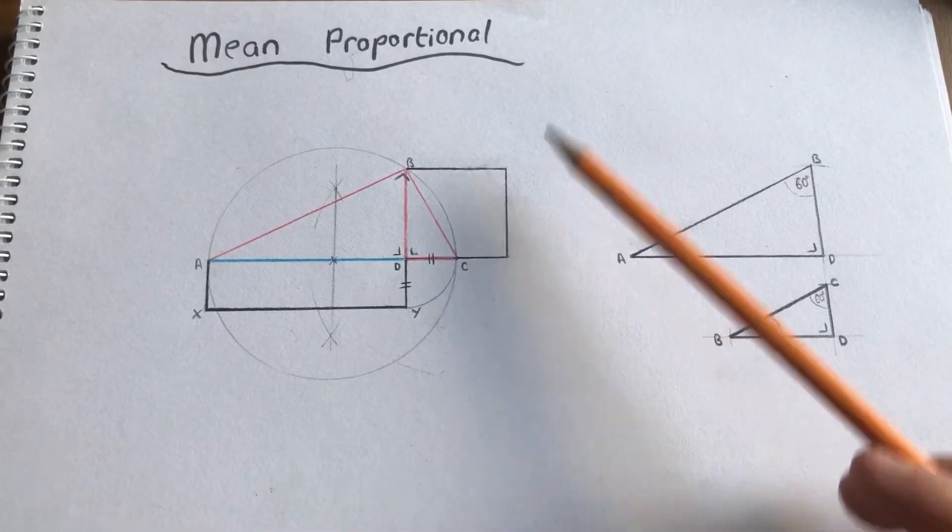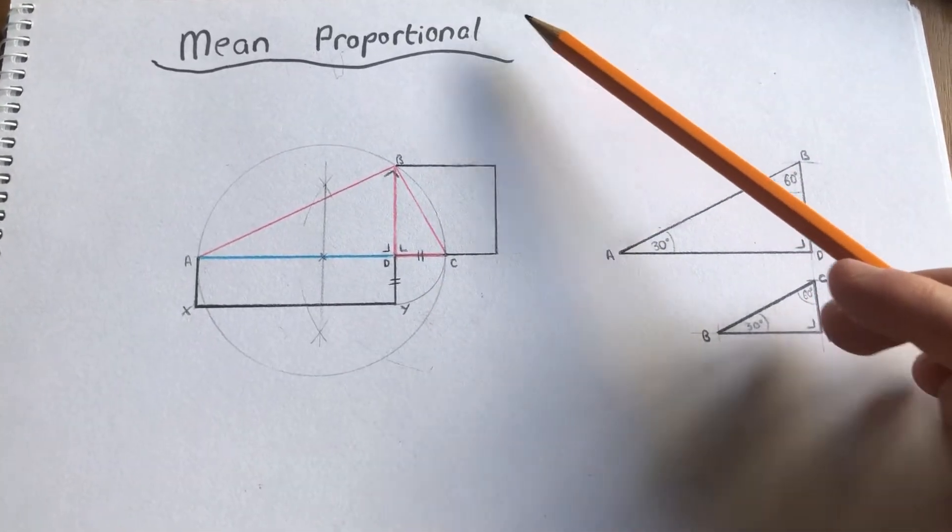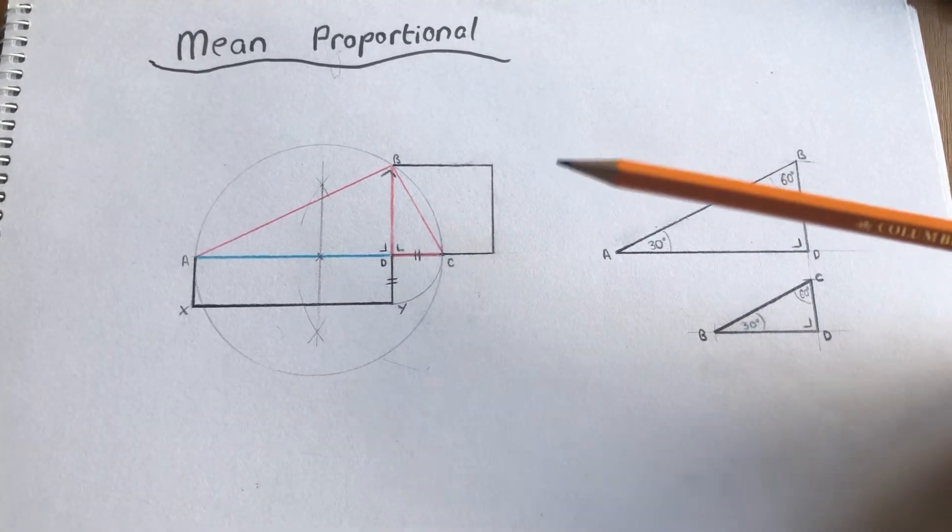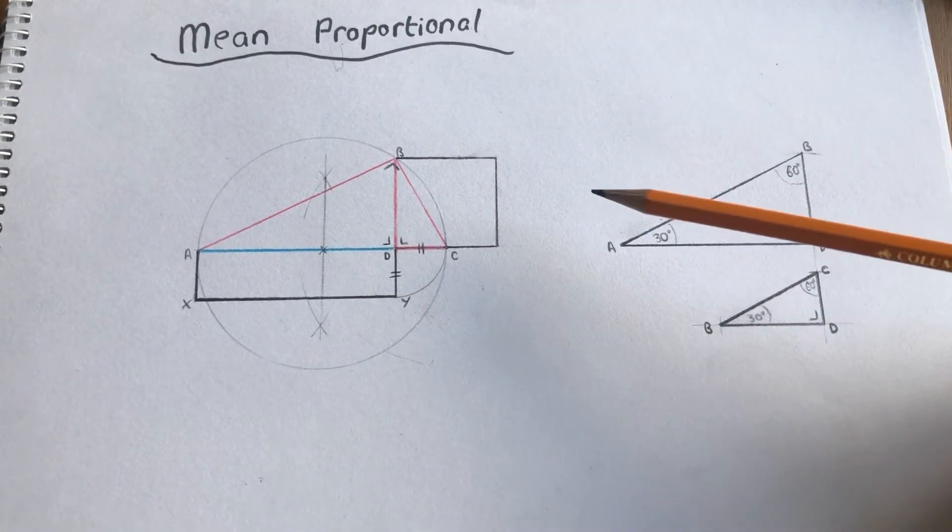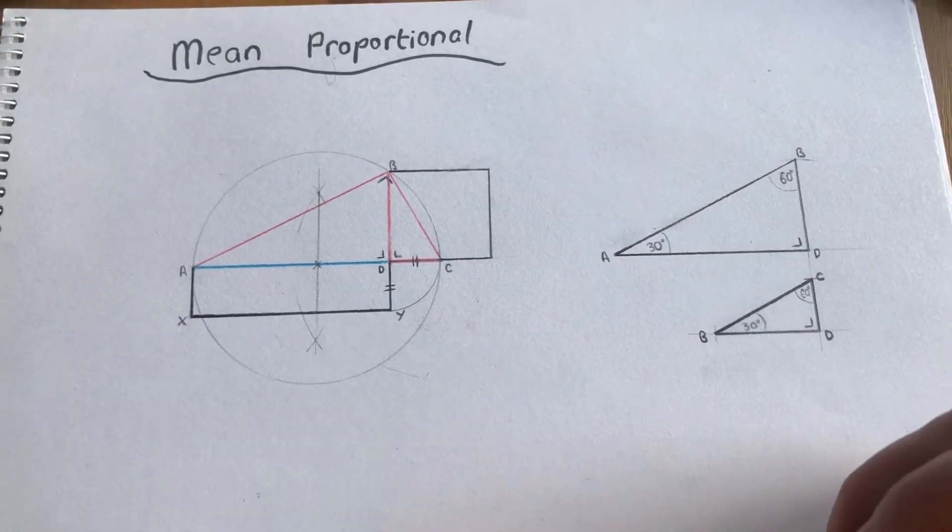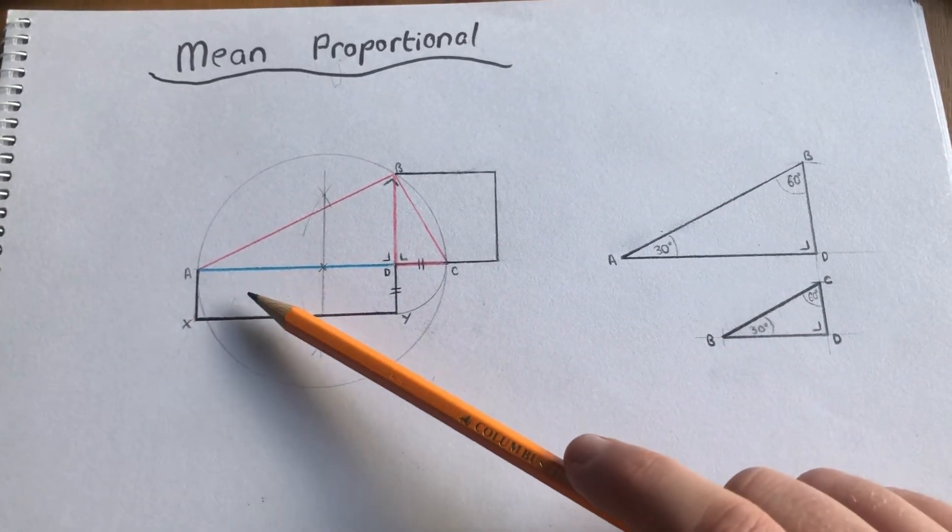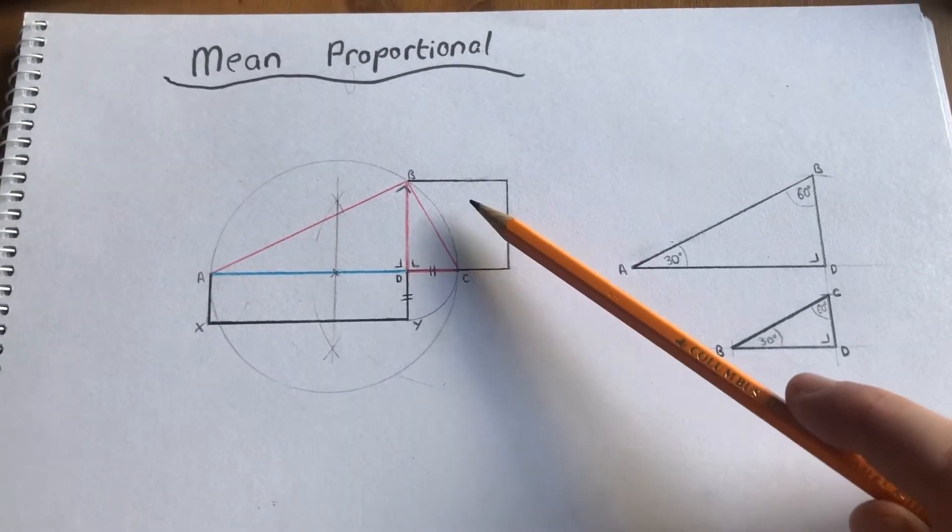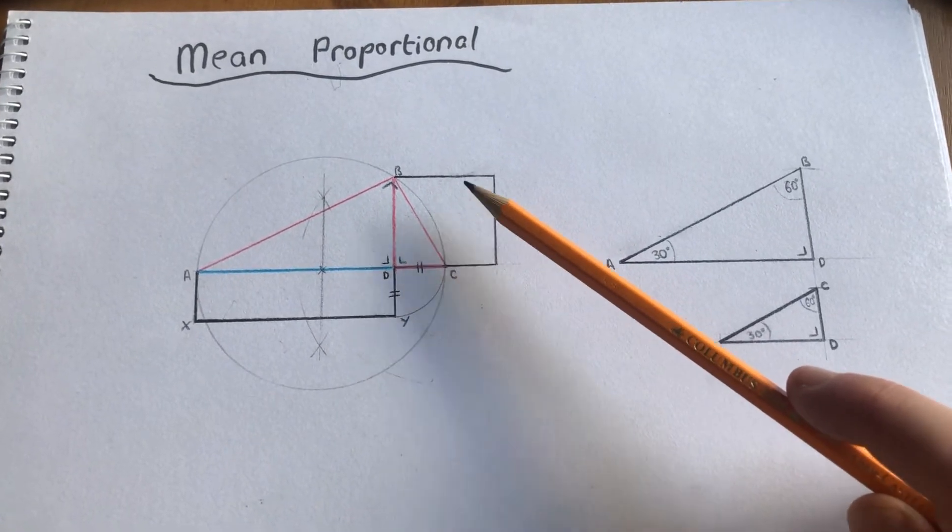This video will help you understand the mean proportional and how to find the geometric mean of two lines or a rectangle and a square. This video explains how to turn a rectangle into a square of the same area.